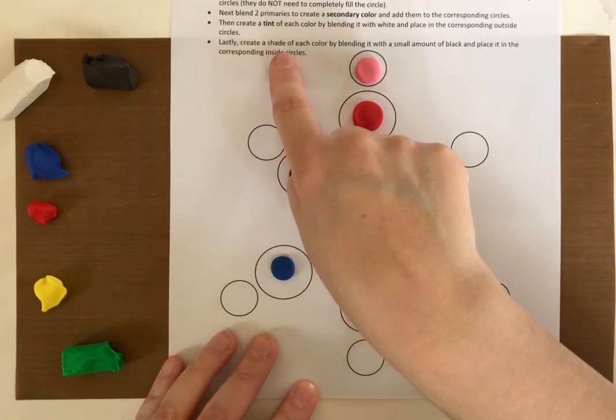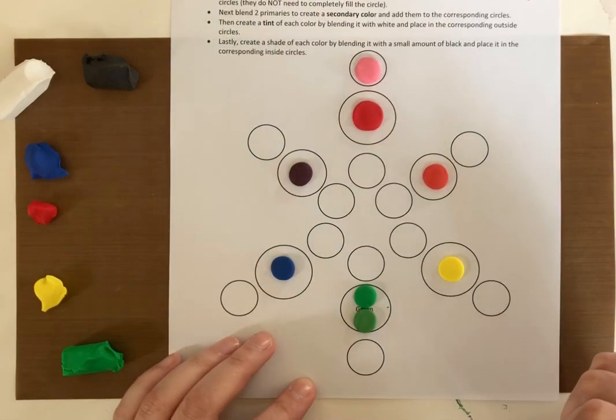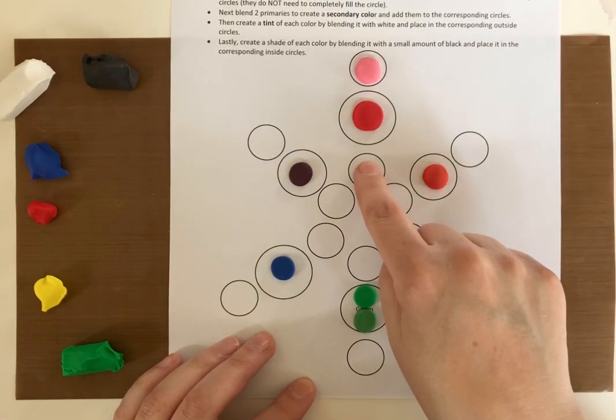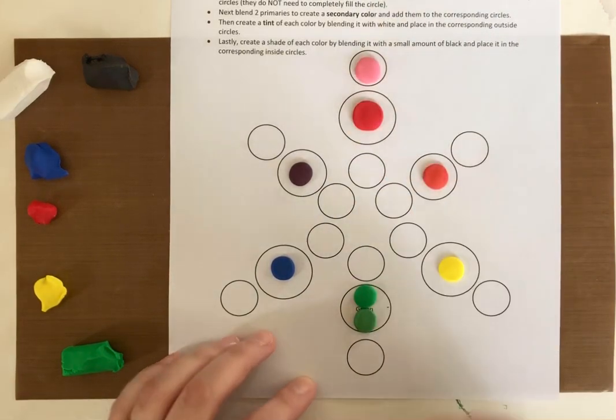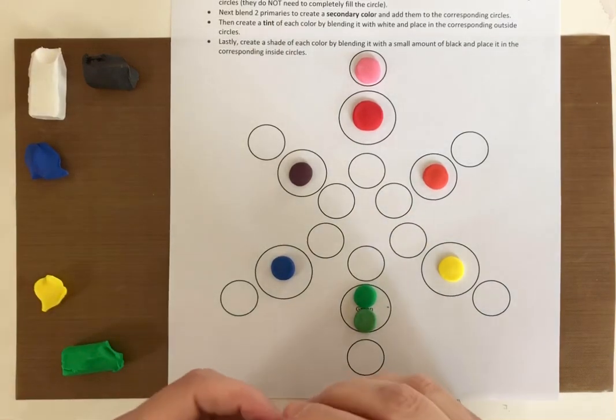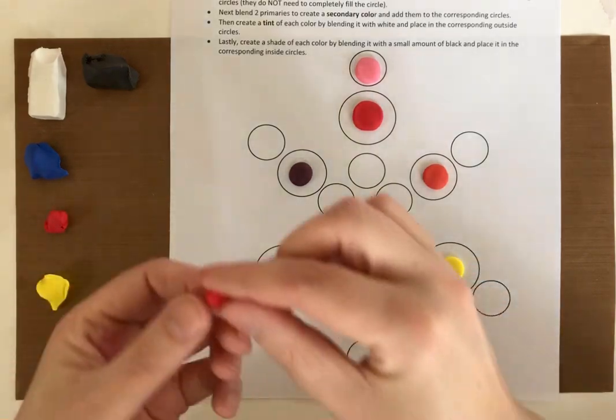Now the last one, lastly you're going to create a shade of each color by blending it with a small amount of black, and then you're going to place it in the corresponding circle, so you'll go this way for the black. Now black is super strong, so you only need a little teeny tiny bit of black to mix with any of the colors.